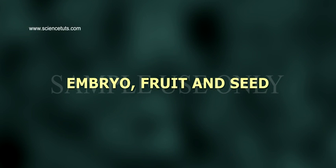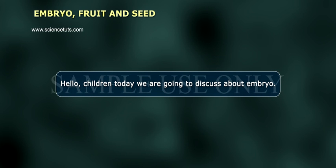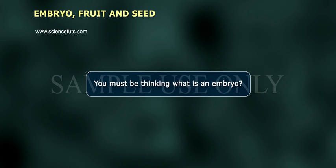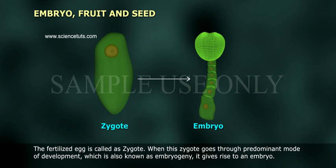Embryo, Fruit and Seed. Hello children, today we are going to discuss about embryo. You must be thinking, what is an embryo? As we know, the fertilized egg is called a zygote. When this zygote goes through the predominant mode of development, which is also known as embryogeny, it gives rise to an embryo.